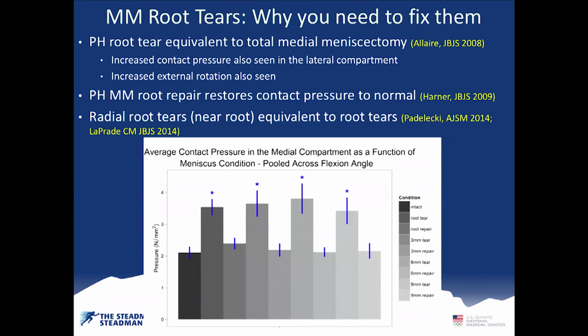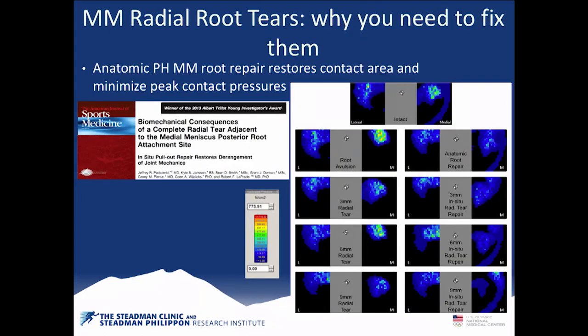Our group has shown that radial root tears — for the medial meniscus in Padalecki's study and the lateral meniscus in my son Chris's study in JBJS — with the intact state and then the root tear, followed all the way up to a centimeter away from the attachment site, the meniscus is basically totally dysfunctional. Using tech scan data, orange and red is bad. When you have a root tear, whether right at the attachment site or a centimeter away, it's very bad in terms of the overall increase in force transmitted to the joint.